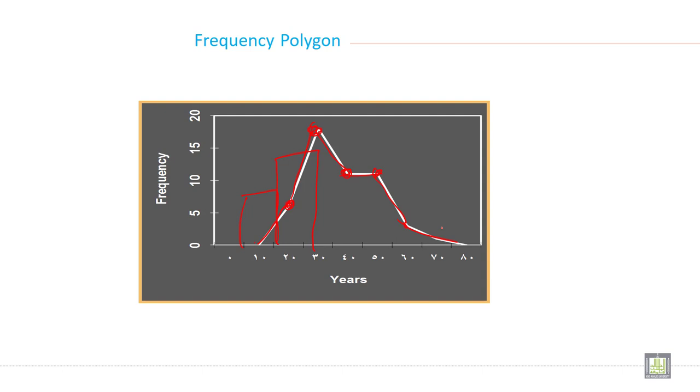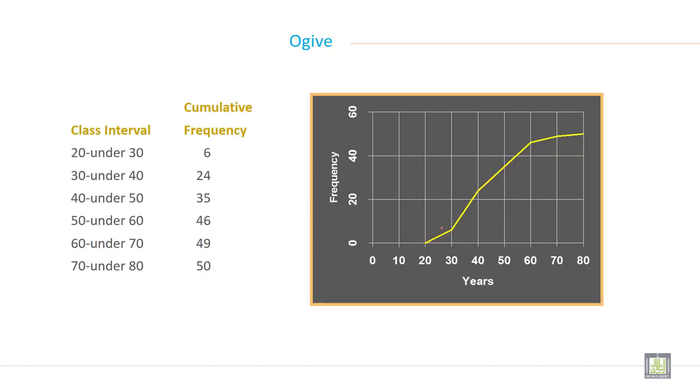How you can make ogive? Ogive, when you draw cumulative frequency on graph, it is called ogive. This is cumulative frequency given and the same shown here on the graph and it is called ogive.